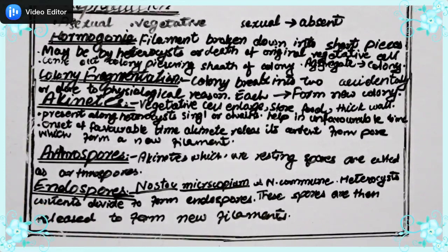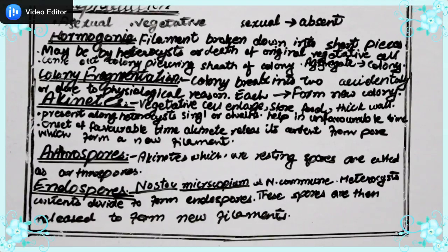The fifth method is endospore formation, seen in Nostoc commune and Nostoc microscopium. In these two species, the heterocyst contents divide to produce many spores from within the heterocyst. These spores are released, and new filaments and new cells of Nostoc are produced. This is how reproduction of cyanobacteria or Nostoc takes place.